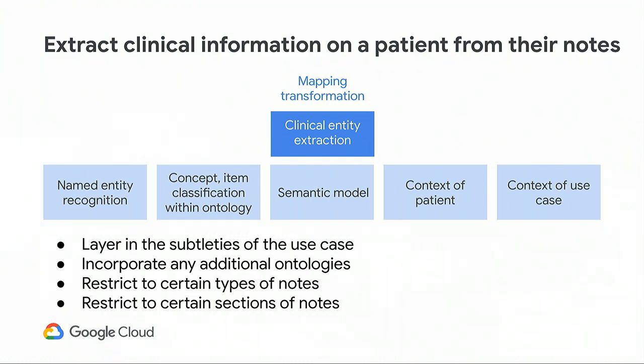Any additional ontologies you need to layer in, note section parsing, and getting the notes there in the first place — these are the five areas we're looking at. What we're working on is an API to handle the first portions of this. Named entity recognition alone is insufficient; you need concept classification and the semantic model together to achieve clinical entity extraction.